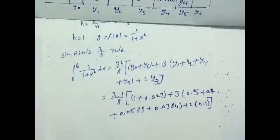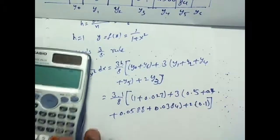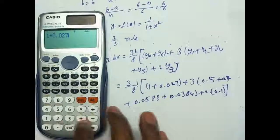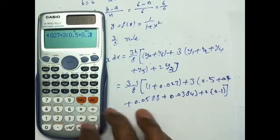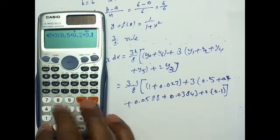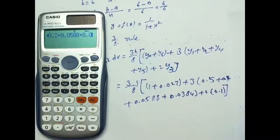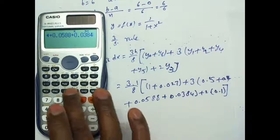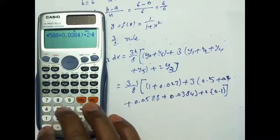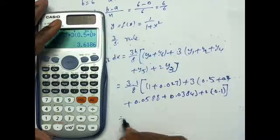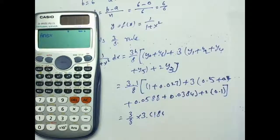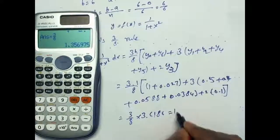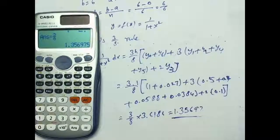Now we find the value using a calculator. Computing the bracket: 1 plus 0.027 plus 3 into 0.5 plus 0.2 plus 0.0588 plus 0.0384 plus 2 into 0.1 equals 3.6186. Then 3 by 8 into 3.6186 equals 1.35697. Thank you for watching my video.